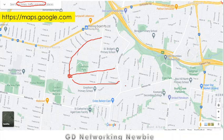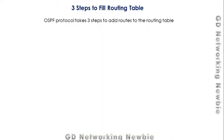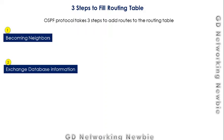OSPF effectively follows three steps to fill the routing table. Once the router has a routing table, it can make routing decisions. These three steps are: first, routers that are part of OSPF become neighbors; second, they exchange database information — the network information — with each other; and finally, in the third step, they calculate the best route.